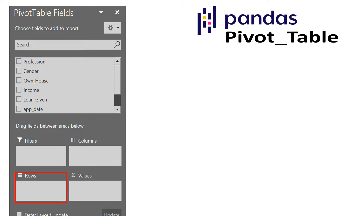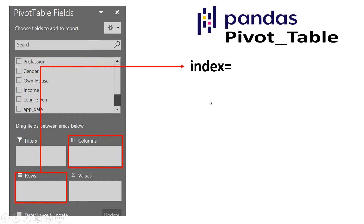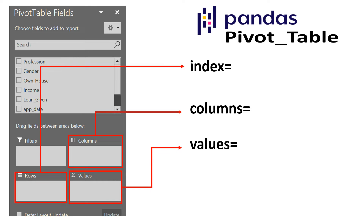Let's go through them one by one. For the rows box we have a parameter called index. For columns we have the columns parameter. For values we have the values parameter. In the values box we also provide the aggregation method. In Pandas pivot_table you provide the columns and along with that the aggregation functions. If you don't provide one, by default it will give you the mean of whatever column you specify in the values parameter.